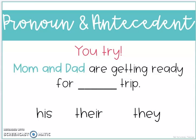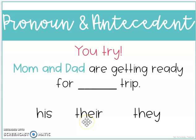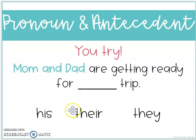Mom and dad are getting ready for blank trip. So mom and dad are getting ready for his trip, their trip, or they trip? Their trip. Mom and dad are getting ready for their trip, because mom and dad is more than one person, so your pronoun has to agree.